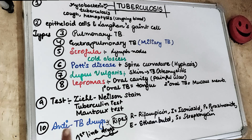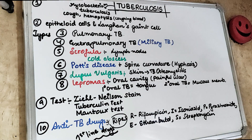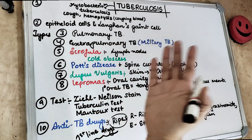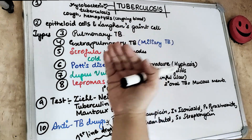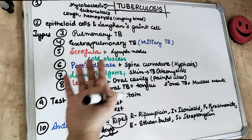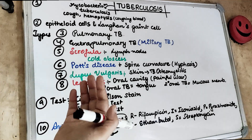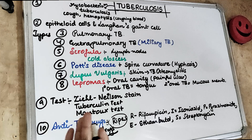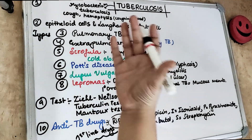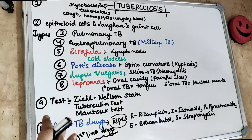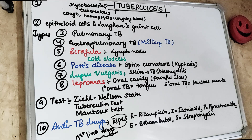How does Mycobacterium tuberculosis spread inside the body? Most people contact tuberculosis via droplet infection. If anyone is coughing or sneezing, we are mostly getting TB because of that.